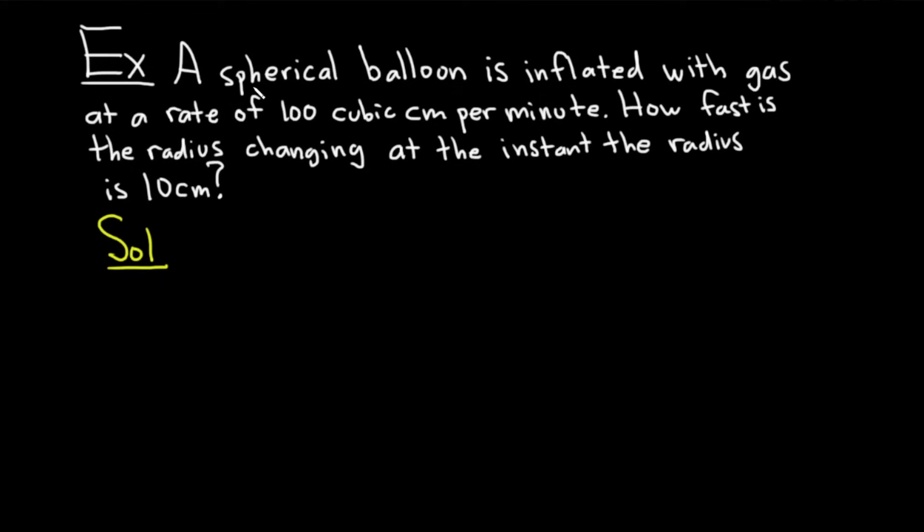The problem is talking about a spherical balloon. Furthermore, it says cubic centimeters per minute. But because it's cubic units, we know it's volume. The formula for the volume of the sphere is V equals 4/3 π r³.